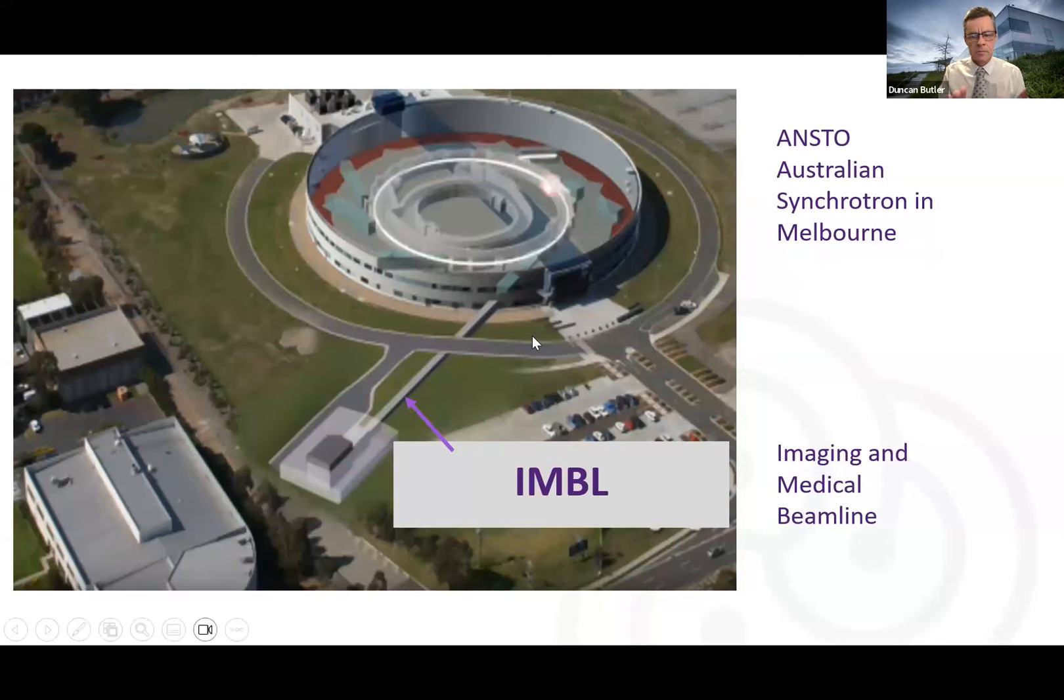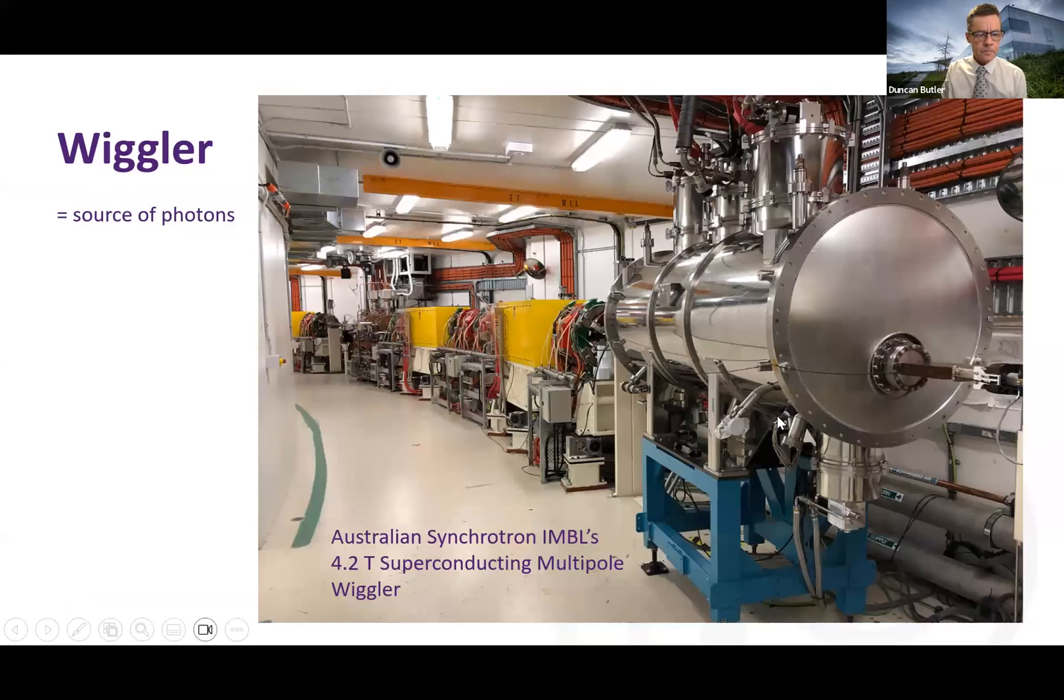This white line is the electrons in orbit. The reason for that is they do imaging in the far hutch, and the long beamline gives them really beautiful images. But the radiotherapy experiments are up close to the source where the intensity is much higher. This is a photograph inside where the electrons travel, inside the storage ring. Inside the yellow boxes are bending magnets. And this device here, the silver thing, is a cryostat containing the superconducting multipole wiggler. It goes up to 4.2 tesla, makes the electrons wiggle, and produces an extremely intense beam of x-rays or synchrotron radiation.